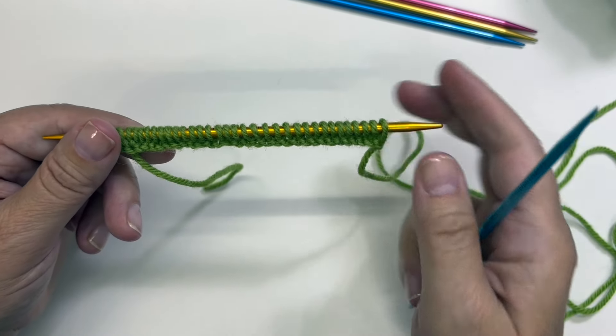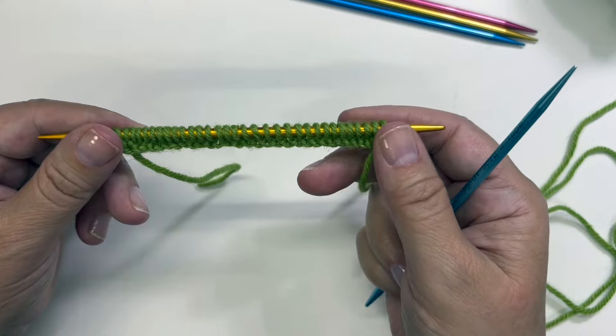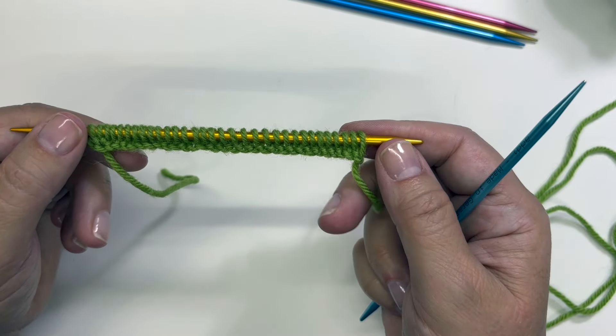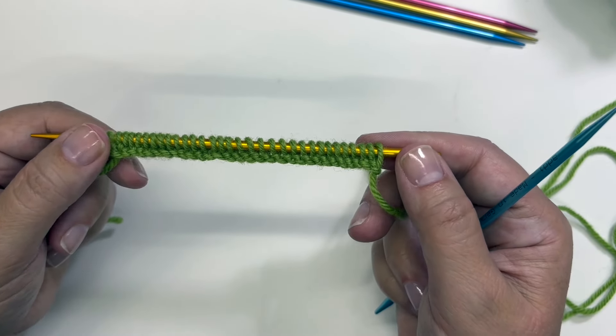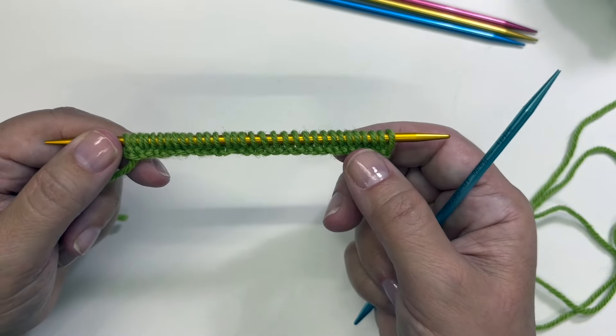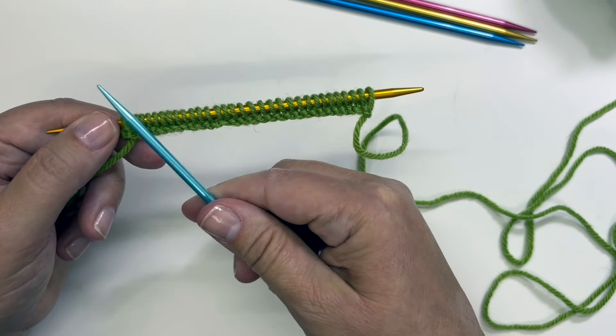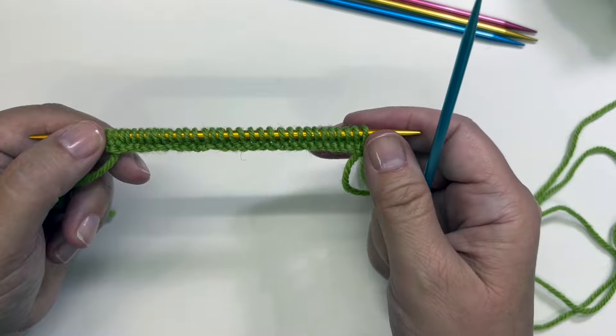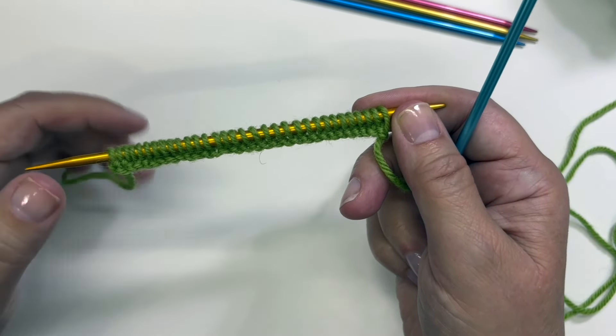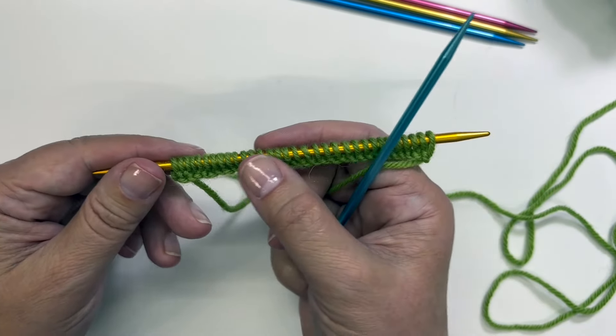Sometimes we get asked how to split up stitches. So I've cast on 32 stitches onto a double pointed needle and I'm going to use this to make socks. Now I need to split up these stitches onto two more needles to make a little triangle here to get going with.